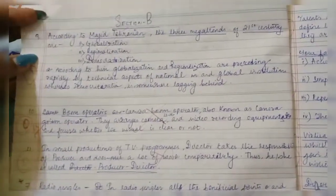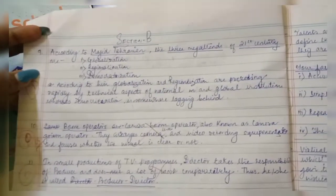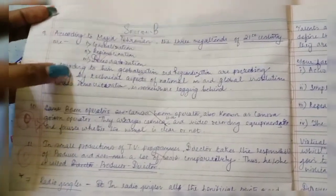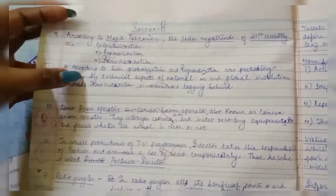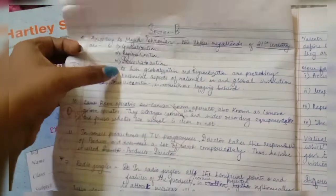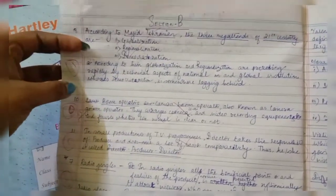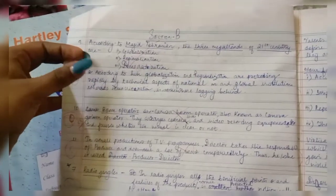In Section B, as I had mentioned while discussing Unit 3, this topic was going to come. It also came in BOJ and in the pre-board question paper as well — these three things: globalization, regionalization, and democratization. The paragraph on these is very important.